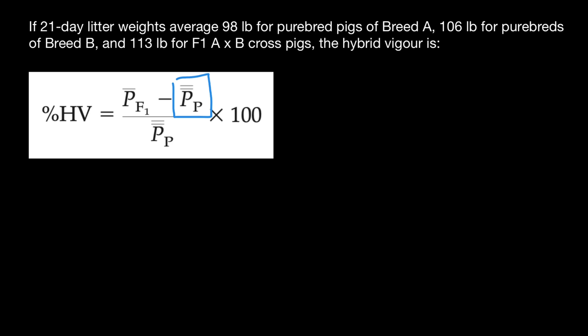So double bar means average. And how do we find the average of the parents? We know that purebred A average weight is 98 pounds, and purebred B weighs 106 pounds, plus 106. And we have to divide by two.